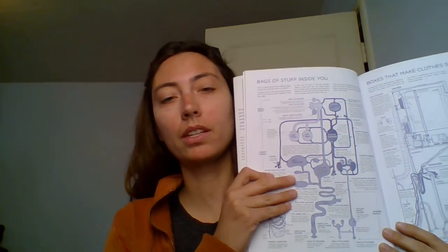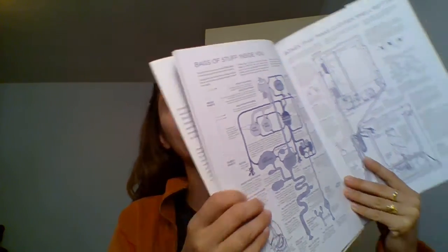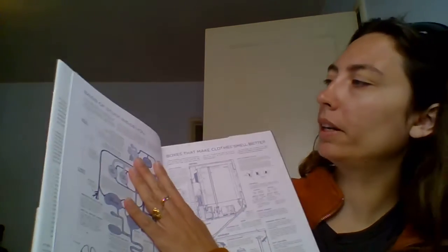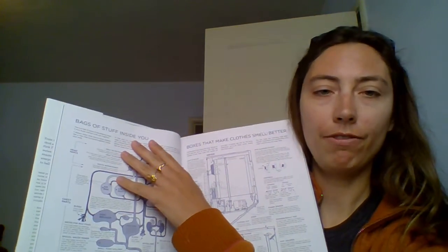So, every page is something like this, and it's just got tons of interesting stuff, from the International Space Station to submarines, and it's all using very simple language. So, you don't even get the common labels for stuff. So, like, instead of human body, this is bags of stuff inside you.